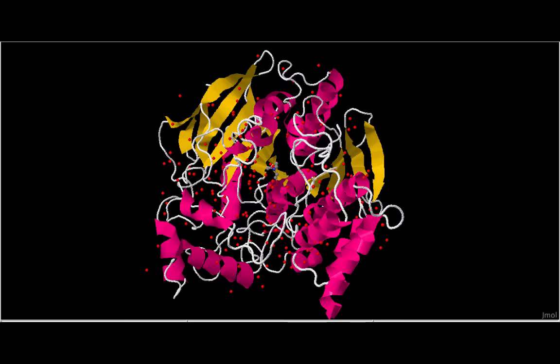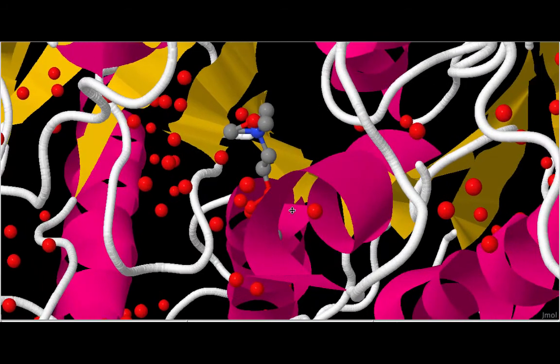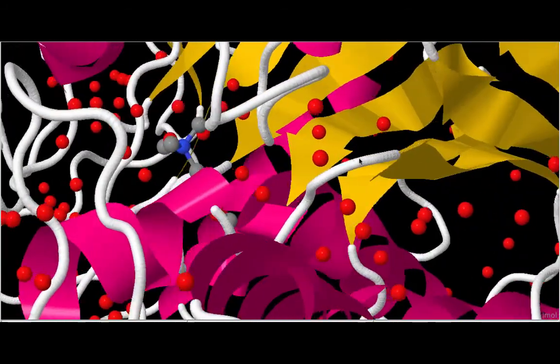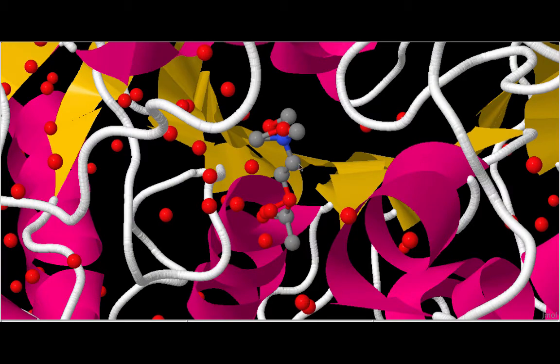Here's the structure of acetylcholinesterase. One of the main features of acetylcholinesterase is the active site gorge, which you can see here. This gorge is about 20 angstroms long and goes about halfway into the enzyme. At the bottom of the gorge is where the hydrolysis of acetylcholine occurs.